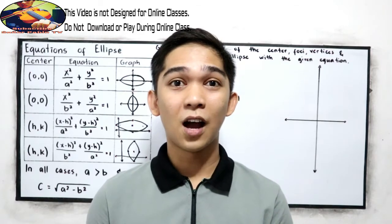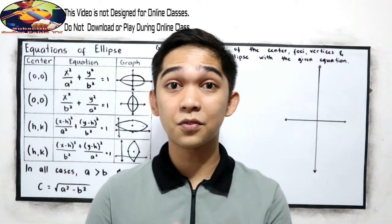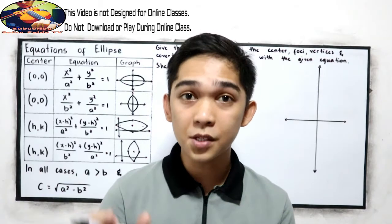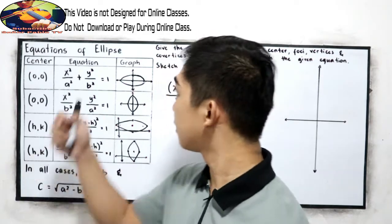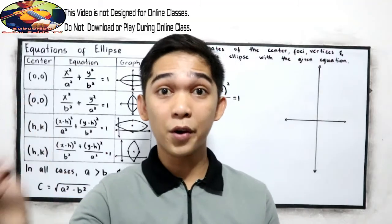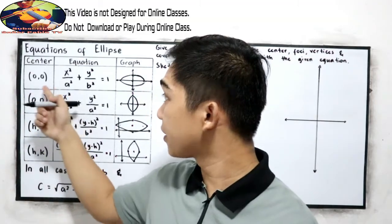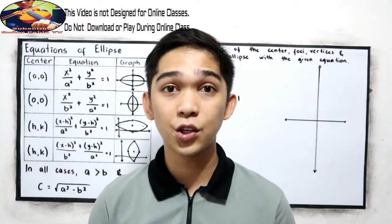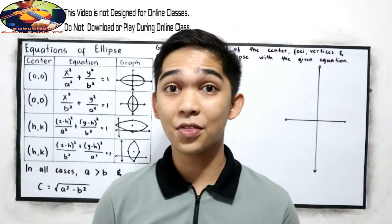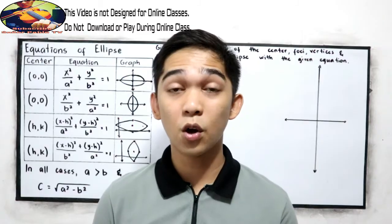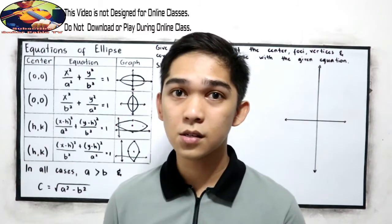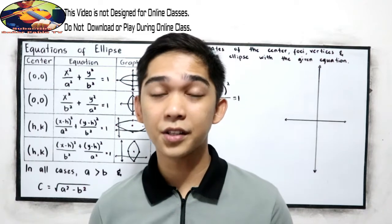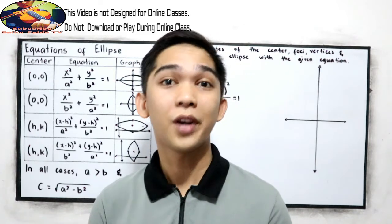After discussing how to find the foci, center, vertices, and co-vertices of an ellipse in our equation in the center (0,0), now what if the given equation is in the center (h,k)? How are we going to find the focus, the center, the vertices, co-vertices, and how to graph?